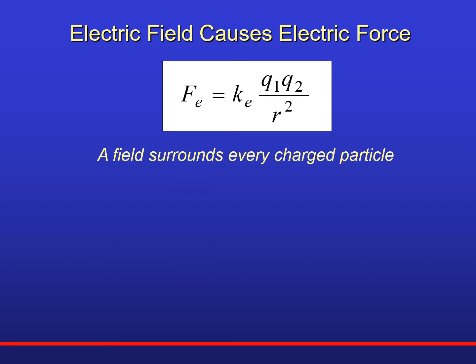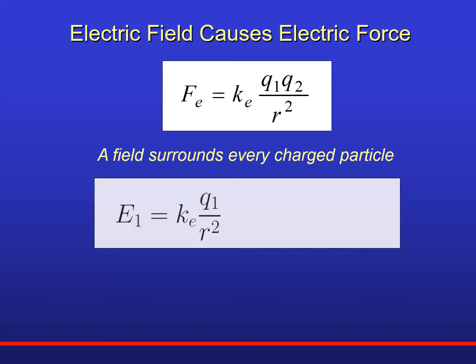Now, we propose that a field surrounds every charged particle. That means in this formula, Q1 has an electric field and Q2 has an electric field. This capital E stands for the electric field. The subscript one means it's the field from charge number one, Q1. Here's the formula for the field: E equals kQ1 over R squared. What does R refer to? There's only one particle — R means the distance from that particle. In order to have a force, you must have two objects. But to have a field, you only need one object, and R is simply the distance from that object.